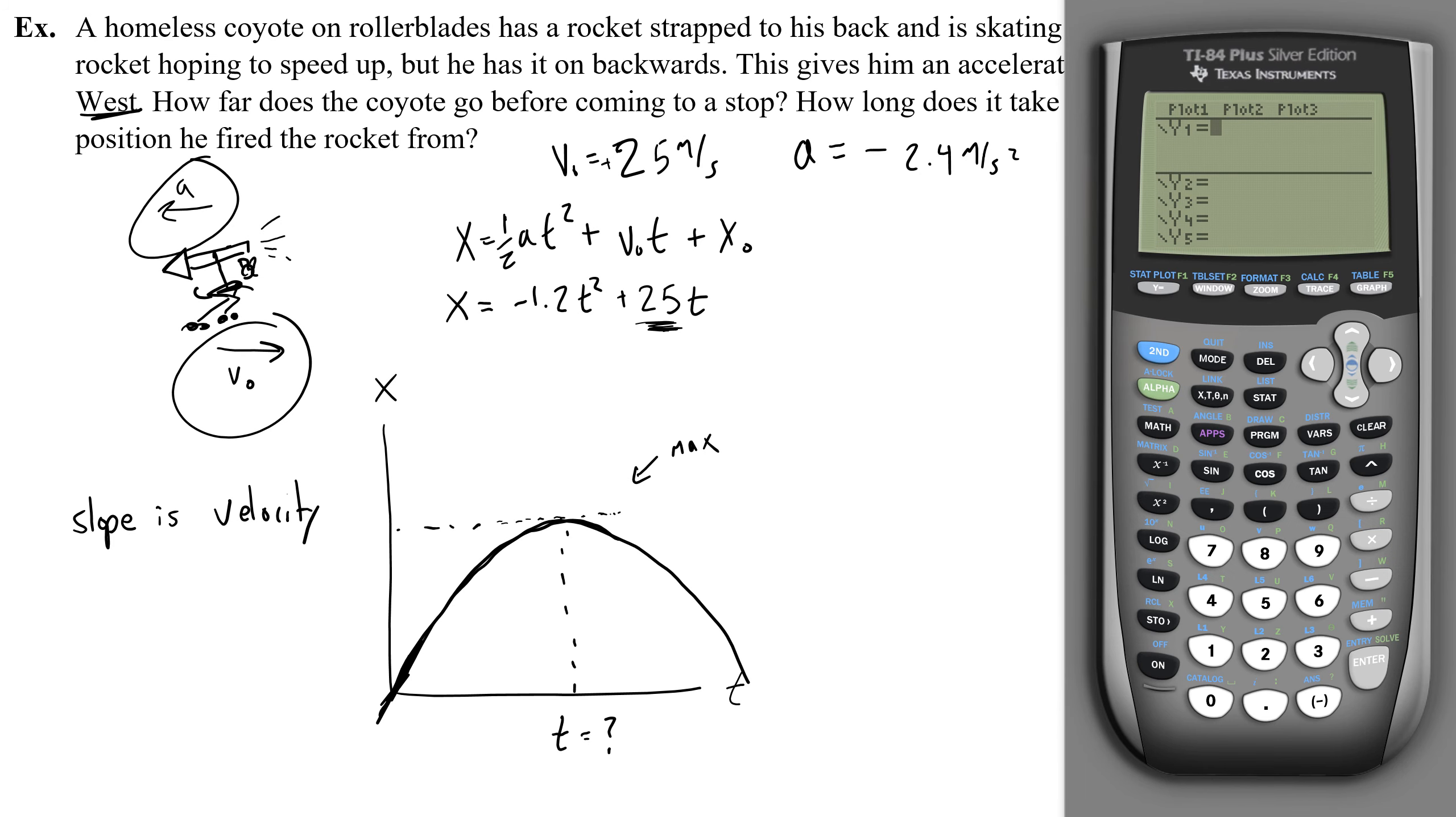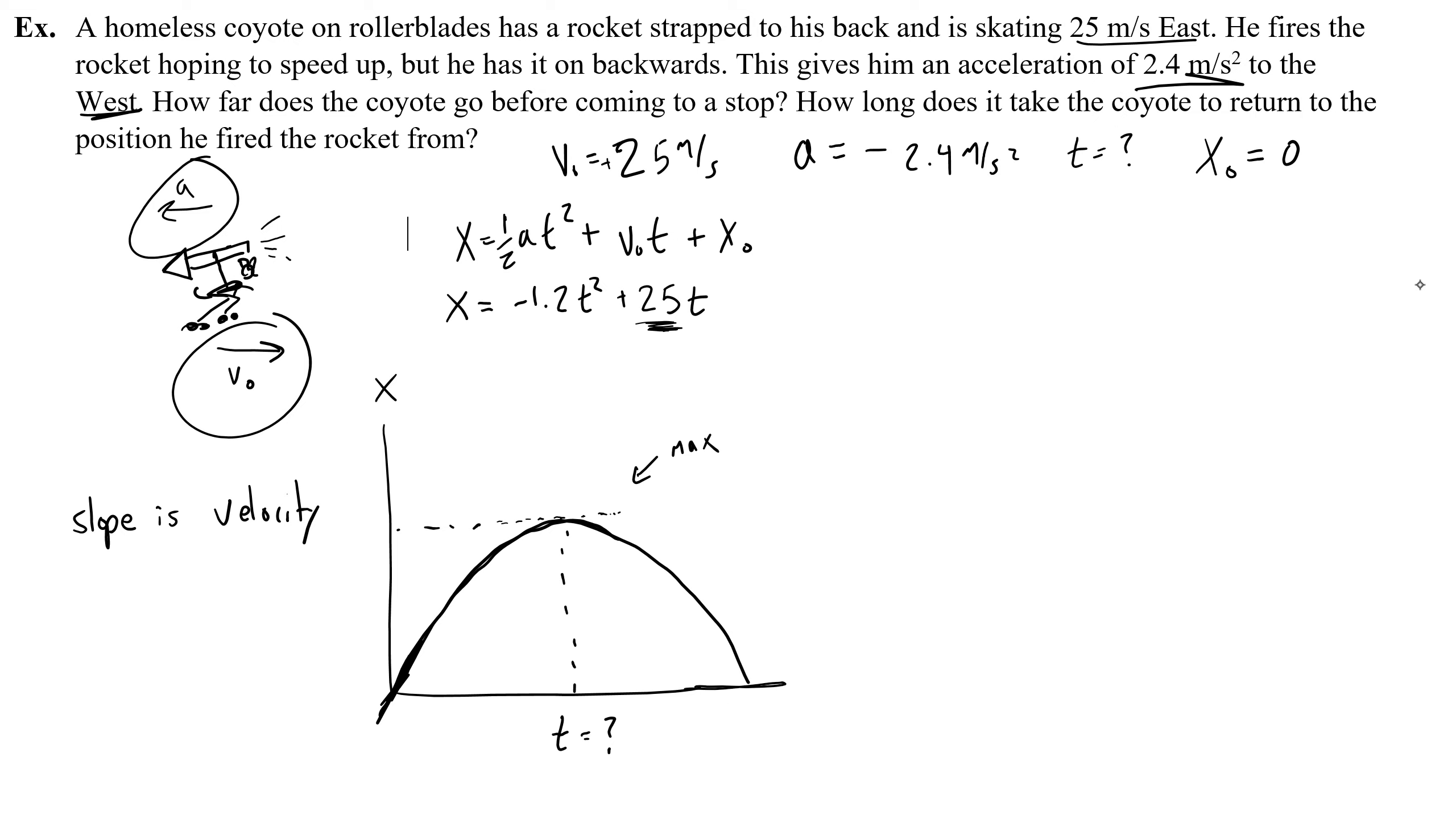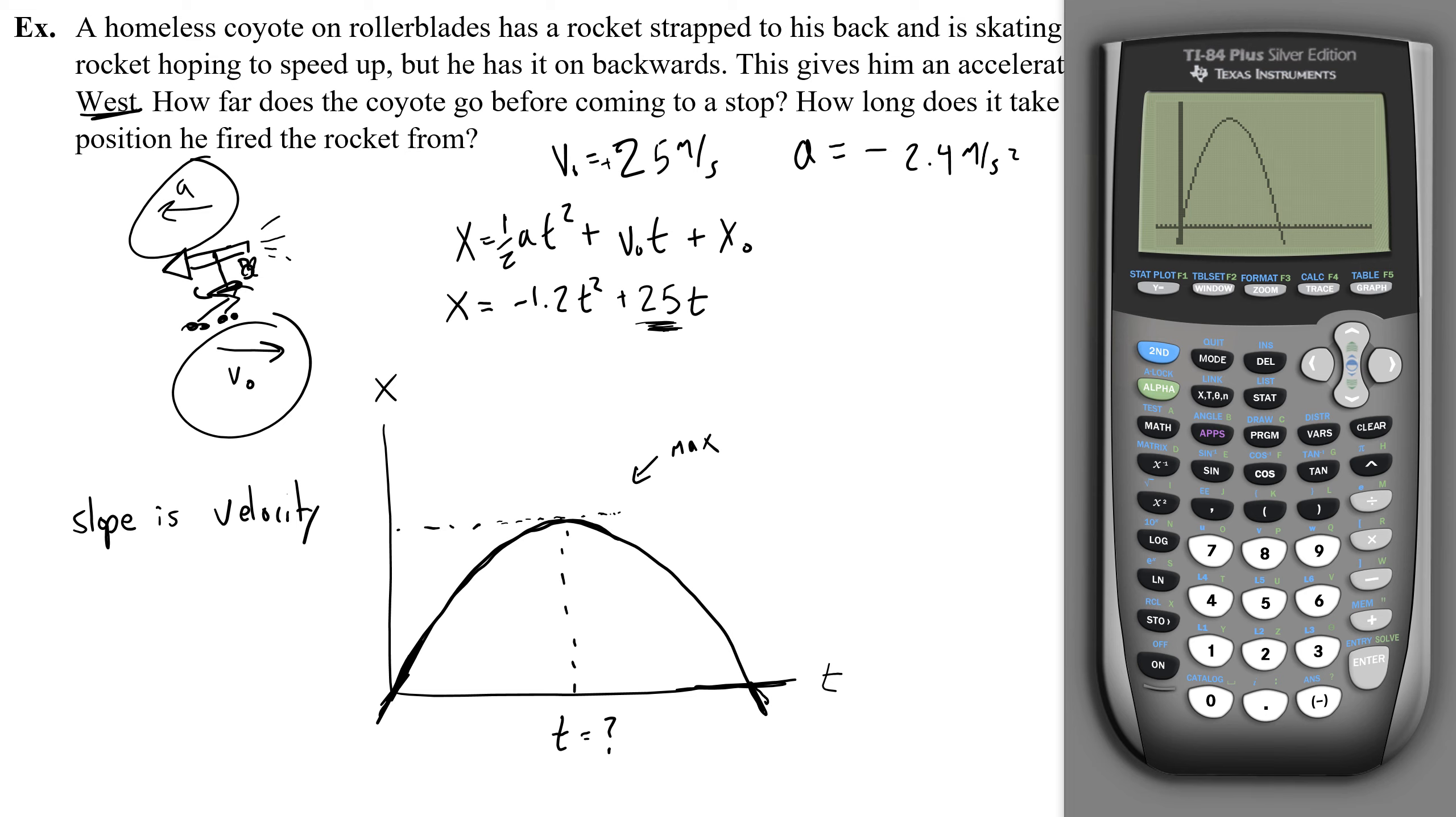So we grab our graphing calculators, and the equation that we're going to put in is negative 1.2x squared plus 25x, and then we're going to graph it. Yes. Looks exactly like what we just drew, except, you know what, I should probably extend this axis a little bit so that I can see it cross. So let's talk about how to find that maximum. And if you're having trouble finding this window, here's the window that I came up with that helped me see the function. So you can use this window if you're having trouble finding this function. Great. Back to the graph.